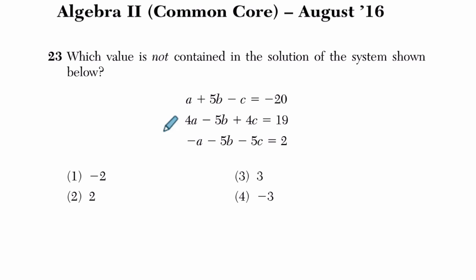Alright, so they want to know which value is not contained in the solution to the system below. So they want to know which of these choices does not satisfy this system. And that just means you could take each of these if you wanted to, plug them into all the equations, and the one that doesn't equal negative 20 or 19 and 2, or balance all three equations, is not a solution, but that seems a little time-consuming.